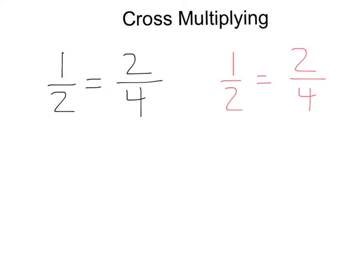Another way to determine if two ratios make a proportion is through cross-multiplying. Before we get into cross-multiplying, I want to show you exactly why we can cross-multiply. Let's say we have a proportion: 1/2 equals 2/4. We know those are equal. So let's go ahead and multiply both sides by 2. If we multiply the left by 2, we have to multiply the right by 2 — remember, we have an equal sign, so you have to do it to both sides always. These 2s are going to cancel each other out, and we'll end up with 1 equals.